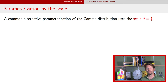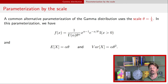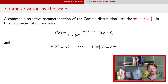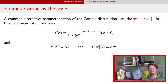Some folks use a different parameterization of the gamma distribution. Instead of using the rate, they use its inverse, which is called the scale. If you have the scale parameter theta instead of the rate parameter, you can update the PDF, mean, and variance by plugging in the alternate parameterization. The expectation becomes alpha times theta, and the variance is alpha times theta squared.